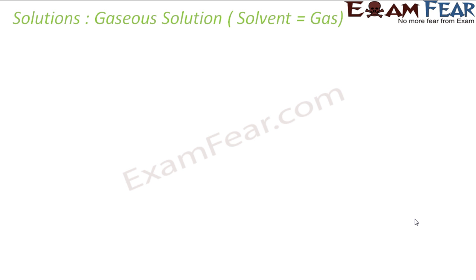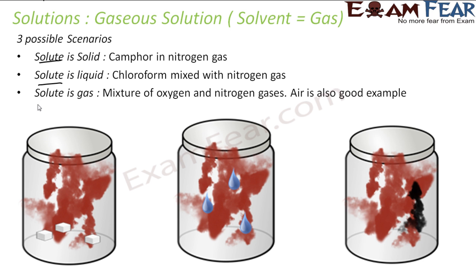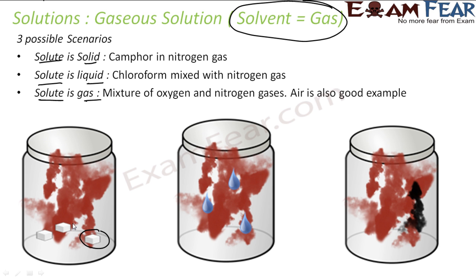In a gaseous solution, the solvent is gas, and the solute can be solid, liquid, or gas. For example, when the solute is solid: camphor dissolved in nitrogen gas forms a homogeneous solution. When the solute is liquid: chloroform mixed with nitrogen gas also forms a solution.